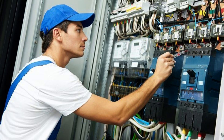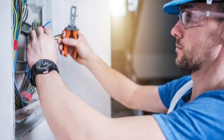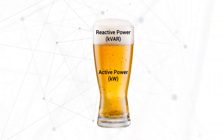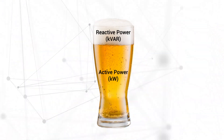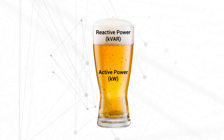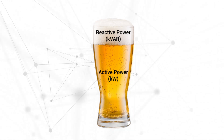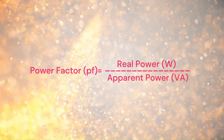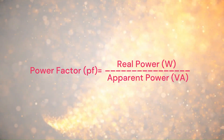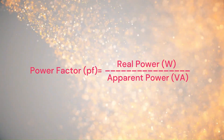Power factor is a fundamental concept in electrical engineering. Simply put, it's a measure of how effectively electrical power is being converted into useful work within an AC electrical system. In an AC circuit, power can be divided into two components: real power in watts and reactive power in volt amperes reactive, or vars. The power factor represents the ratio of real power to apparent power, often denoted as PF or cos phi.